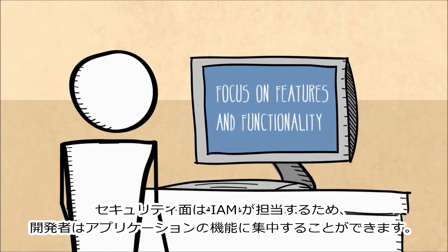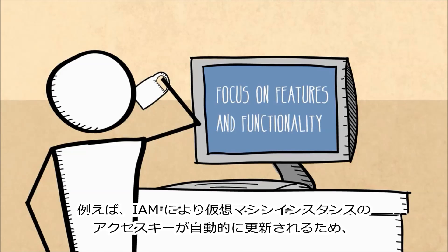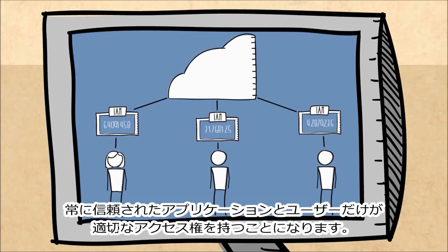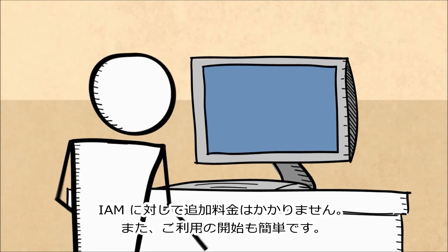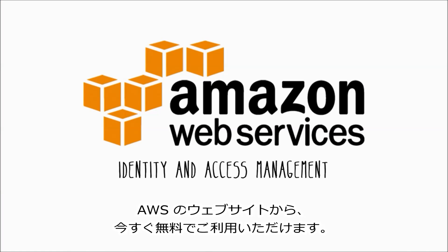IAM lets developers focus on the features and functionality of their applications, while it does the heavy lifting on the security side of things. For instance, IAM can automatically rotate access keys on your virtual machine instances, ensuring that only trusted applications and users have appropriate access at any given time. There's no additional charge for IAM, and getting started is easy — just click the Getting Started tab.